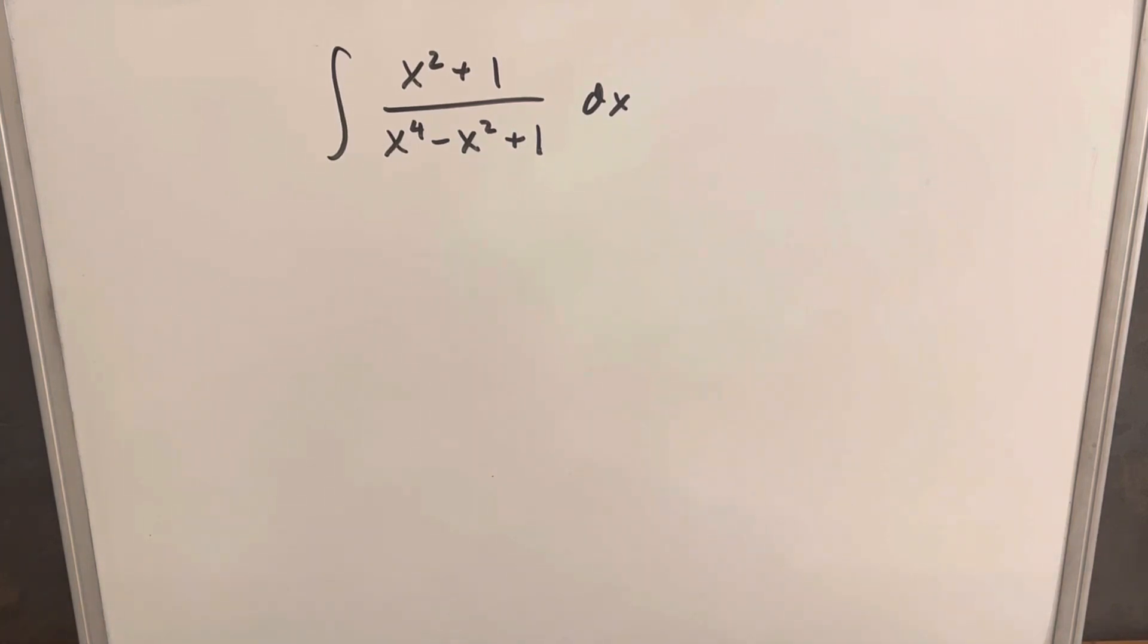Hey, we have on the board the integral of x squared plus 1 over x to the 4th minus x squared plus 1 dx.